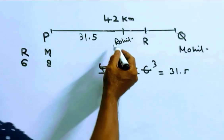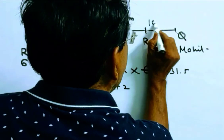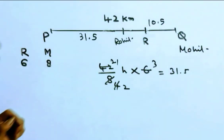Friends, now the distance between Rohit and Mohit is 42 minus 31.5, that is 10.5 km.